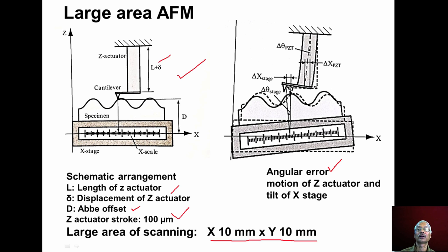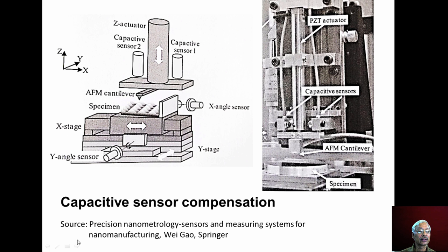There are errors in large area AFM: the z-actuator may tilt, the cantilever may also tilt, and the table can tilt along the x-axis. These angular errors affect measurement results and must be compensated using appropriate sensors. Capacitive sensors are used for compensation: two capacitive sensors compensate for the tilt of the z-actuator, while x-angle and y-angle sensors are used to compensate for tilt of the table surface.